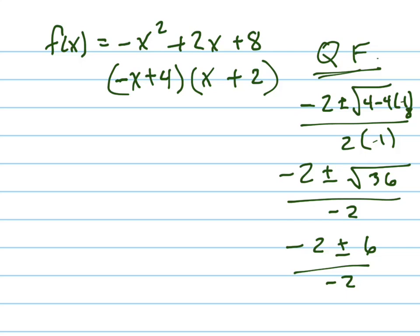I tried so many times. And that factors. Which means negative x equals negative 4, which means x equals 4, or x equals negative 2. There are your two zeros.